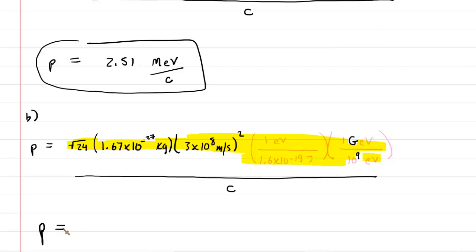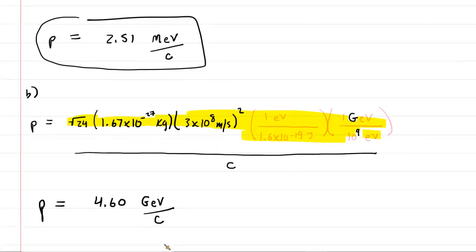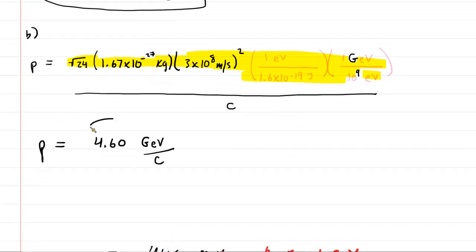And when we punch that in very carefully, we should end up with about 4.60. And then this is giga electron volts divided by the speed of light, c. So that would be the correct answer to part B of this question.